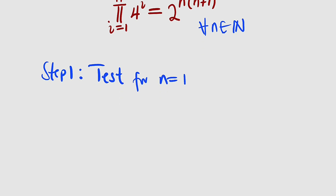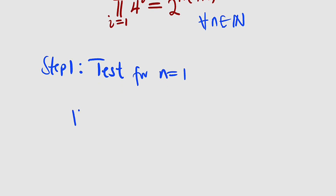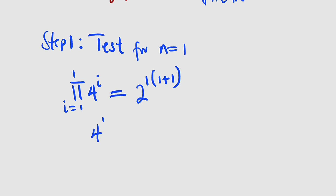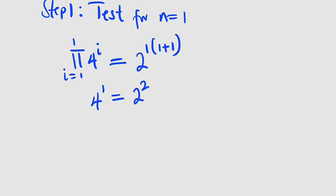We want to test for n equal to 1. So we have the left hand side: the product of 4 to the power of i, i from 1 to 1. This is equal to 2 raised to the power of 1 multiplied by 1 plus 1. The left hand side is simply 4 to the power of 1, and this equals 2 to the power of 2, since 2 multiplied by 1 is 2. So 4 to the power of 1 is 4, and 2 to the power of 2 is also 4. So n equals 1 satisfies this statement.